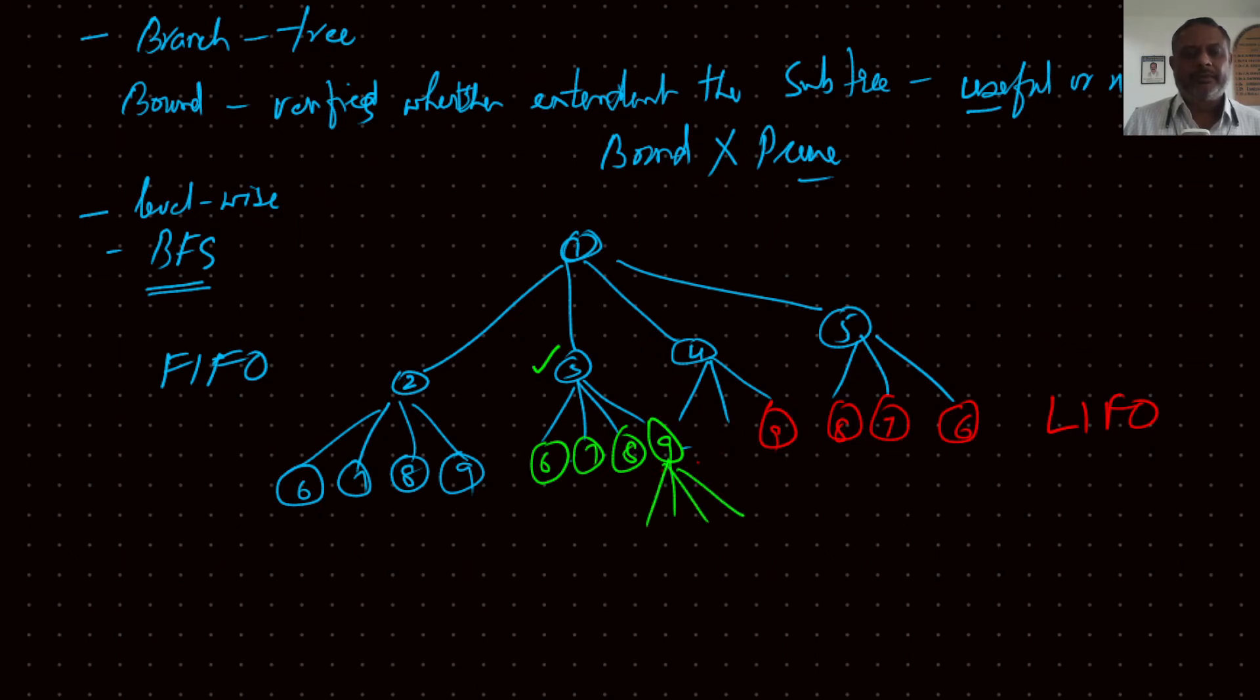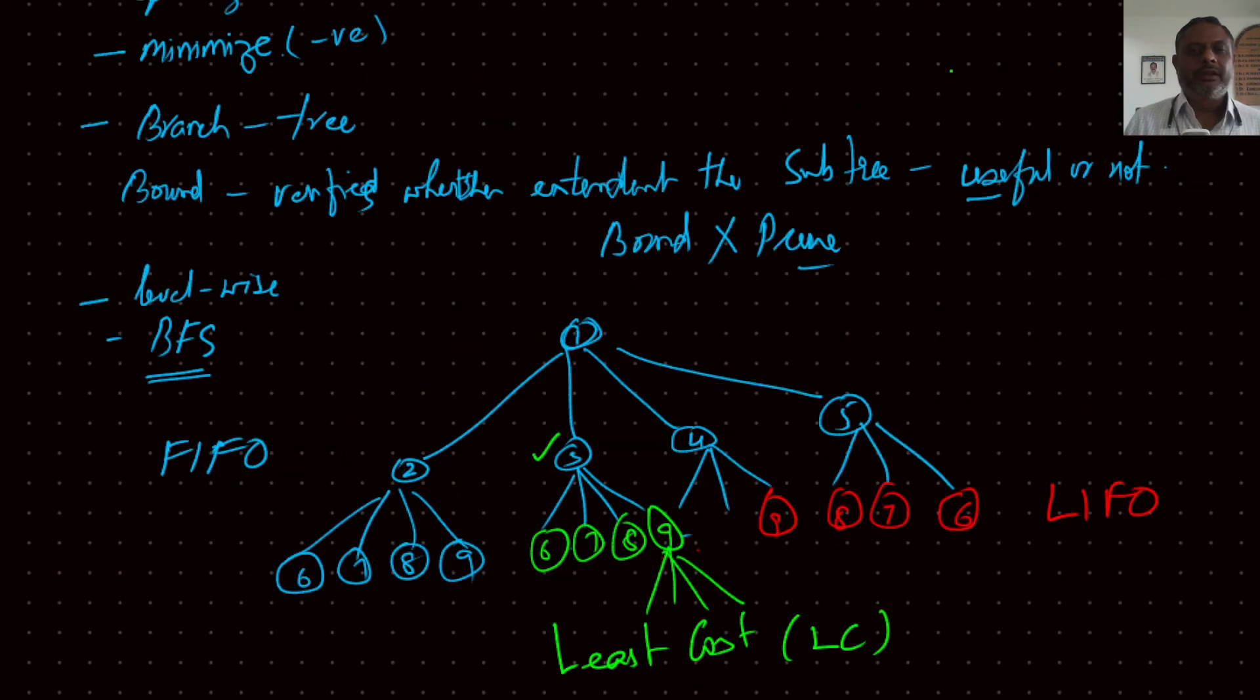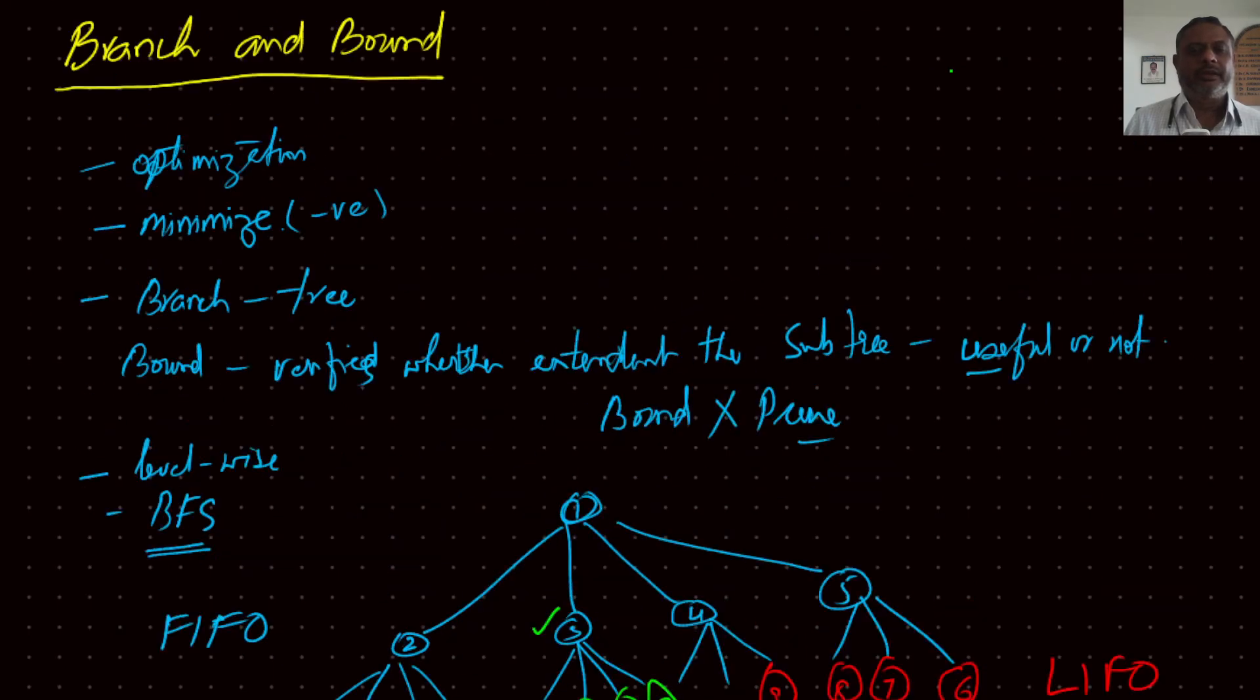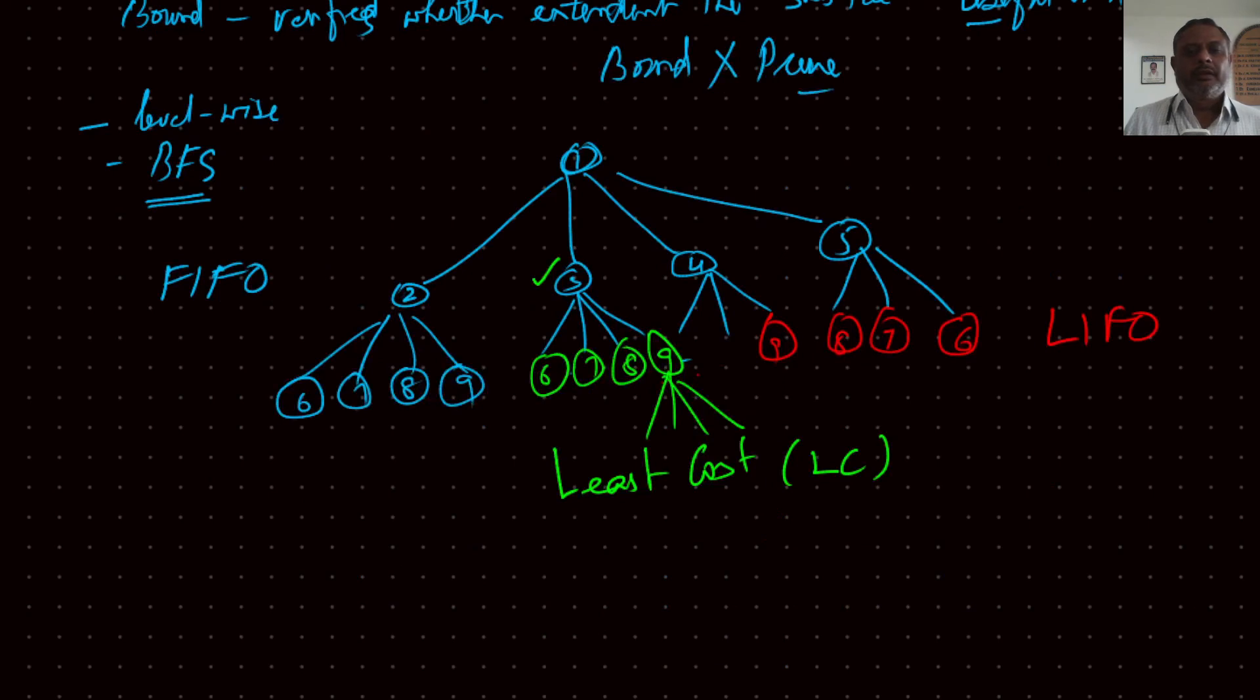So this type of thing is called least cost or LC branch and bound. This is FIFO branch and bound, this is LIFO branch and bound, and this is LC branch and bound. So basically, there are three types of branch and bound techniques. And all of them strictly follow the breadth-wise, nothing depth-wise.